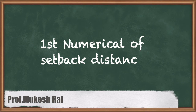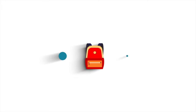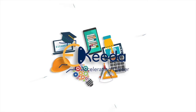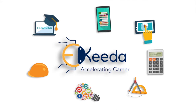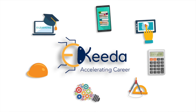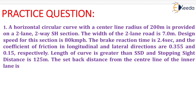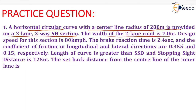Hello students, today we are going to solve the first numerical on setback distance. A horizontal circular curve with a center line radius of 200 meters is provided on a two-lane two-way straight highway section. The width of the two-lane road is 7 meters. Design speed for this section is 80 km per hour.